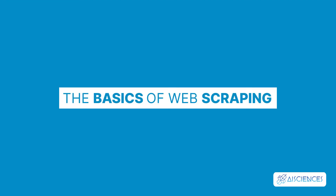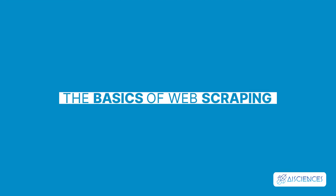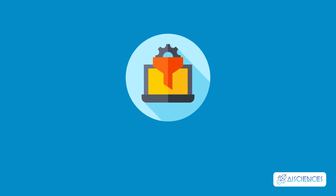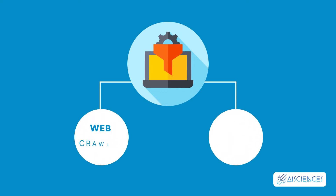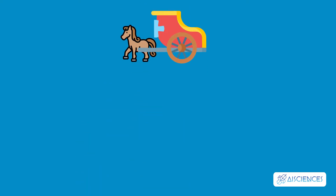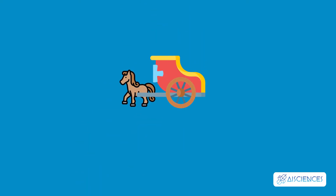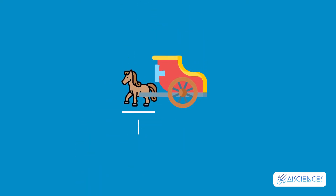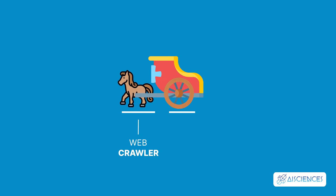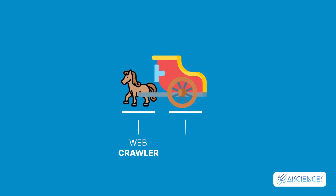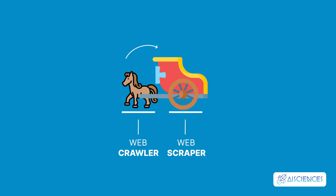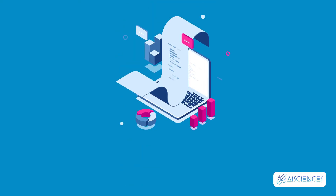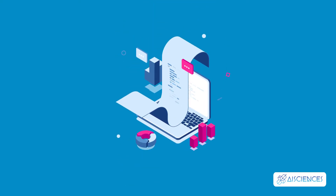The basics of web scraping: web scraping is pretty simple. The technique comprises two parts: one, web crawler, and two, web scraper. Imagine a horse-driven chariot for a moment. You can think of the first part, web crawler, as the horse, and you can think of the second part, web scraper, as the chariot. The crawler always leads the scraper. They go through the internet, extracting the requested data.